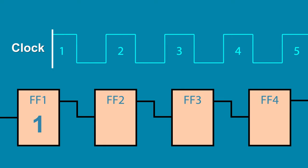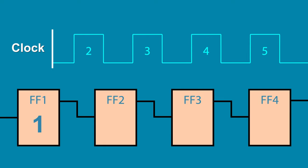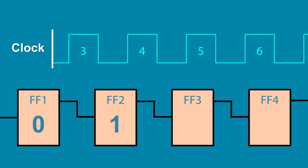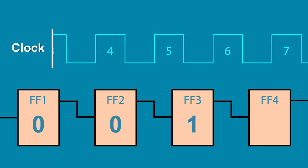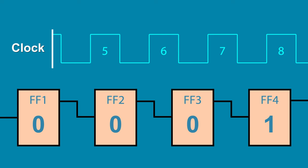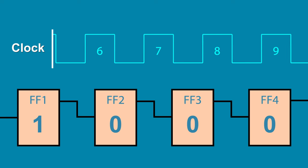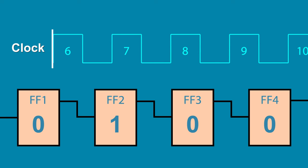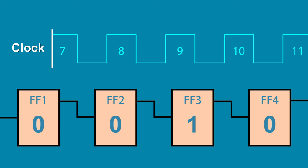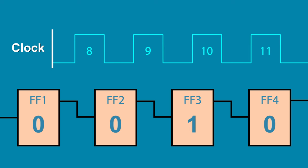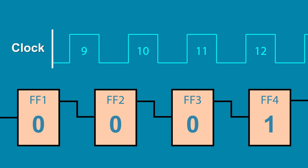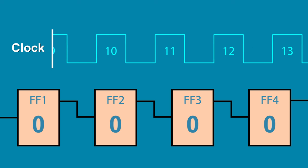A bit of data will be latched in the first flip-flop and will shift to the next flip-flop on each consecutive clock pulse. So in a 4-bit shift register, it takes 4 clock pulses for a bit of data to move across all positions.